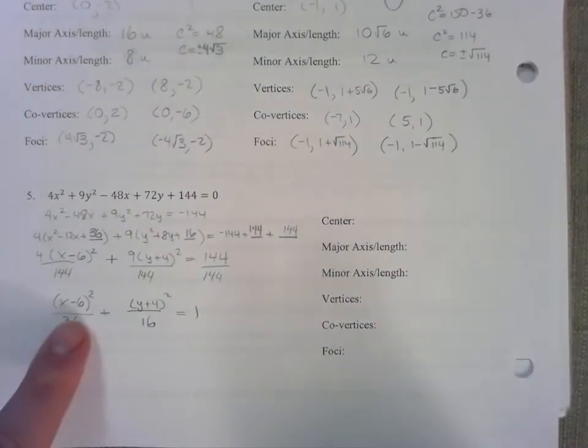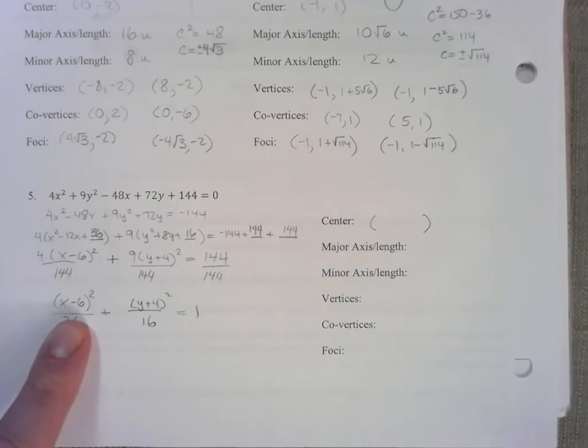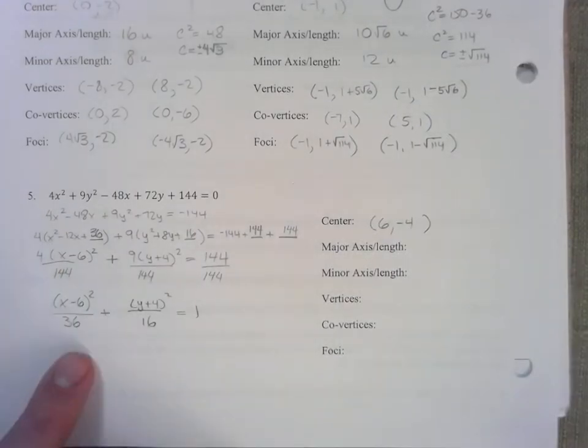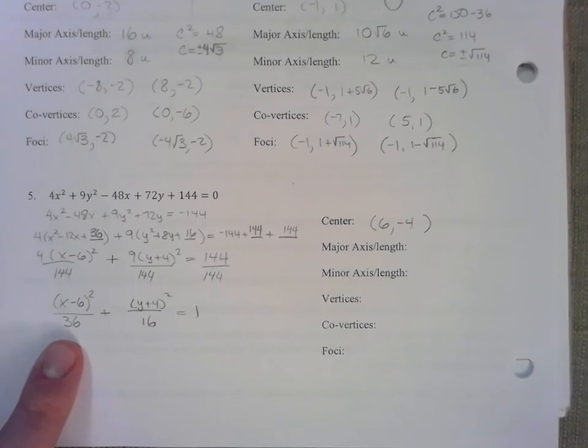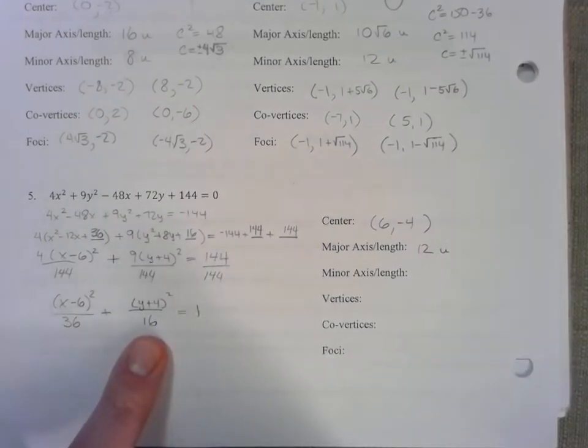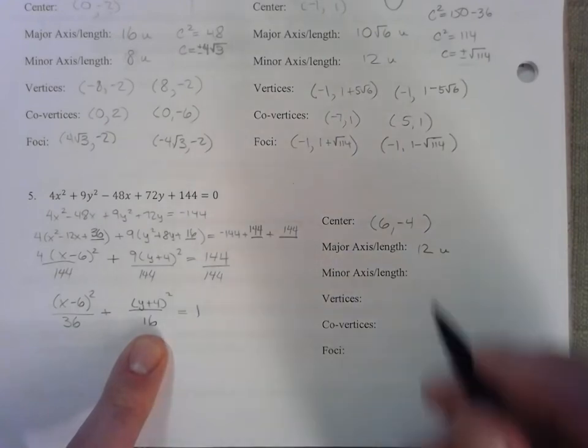Where's the center? 6, negative 4. Which is the major axis? 36 is larger. Square root is 6 times 2 is 12 units. Minor axis: square root of 16, square root makes 4 times 2 makes 8 units.